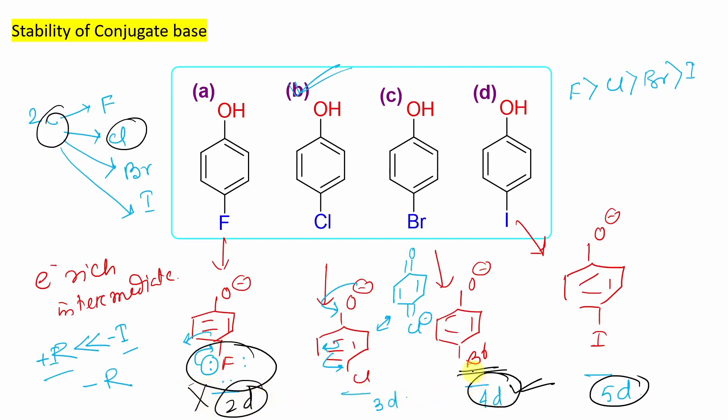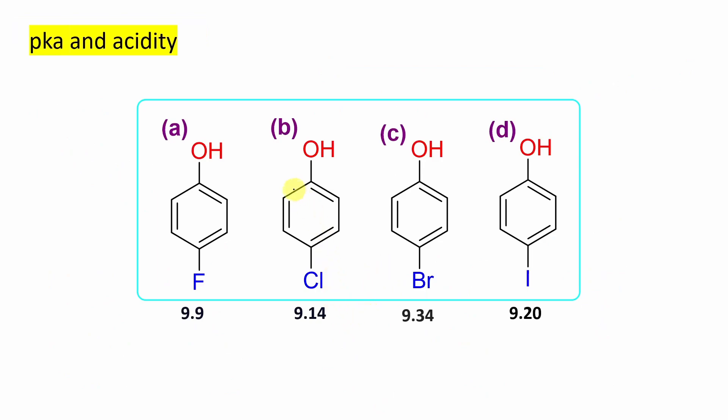So such kind of thing is not possible. Now if the question asks who is maximum acidic, obviously option B. And who is minimum? Option A. So you can see who is maximum acidic. Maximum acidic is option B.